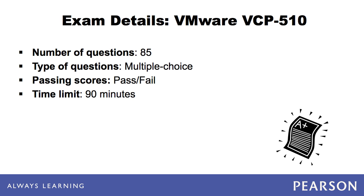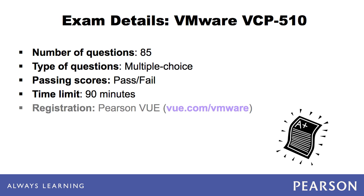In order to take the exam, you must first register with Pearson VUE. Have personal identification such as a Social Security number and a credit card ready when registering. Pearson VUE can aid in finding the closest testing center to you, and they can also help you by phone if necessary.